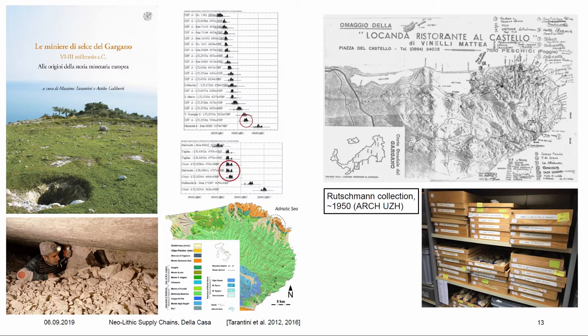Why is this interesting in Zurich? We happen to host a 1950s collection from a man called Ruchmann, who spent a lot of time on Gargano earlier in the 20th century and collected intensively flint from mining and working sites — mostly ateliers close to the mines where the transformation of primary nodules happened. These are surface finds, and a student in Zurich spent a lot of time identifying sites and creating a GIS database to localize what is in all these boxes in our collection.